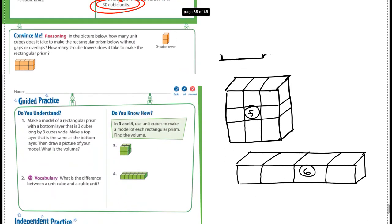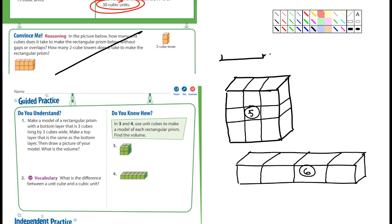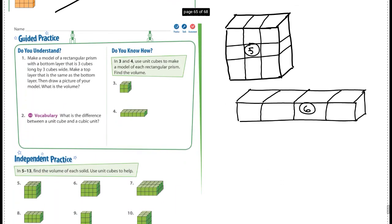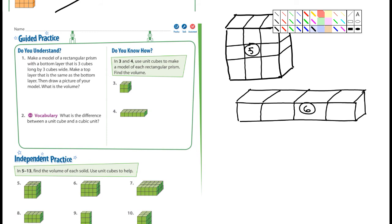I'm not worried about the convince me. You can put a line through that. But since we practiced a few minutes ago drawing rectangular prisms, that's going to come into play in this lesson. Look at number one here. And I do want you to do number one, and number two, and number three, and number four. They ask you to make a model of a rectangular prism with a bottom layer that is three cubes long by three cubes wide, and make the top layer that is the same as the bottom layer. Then draw a picture of your model and what's the volume.